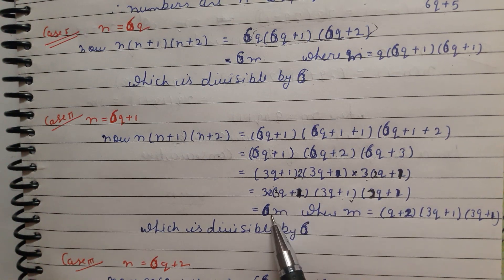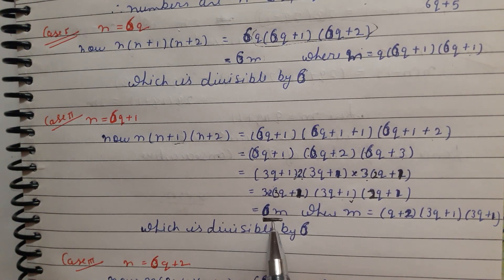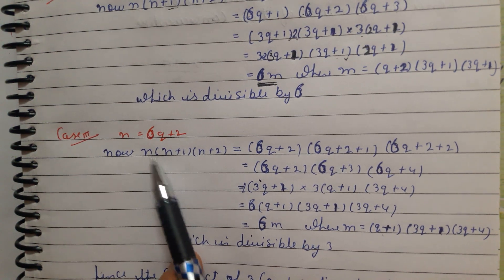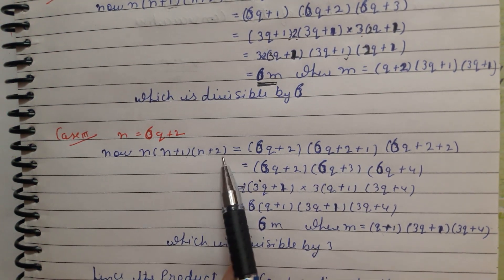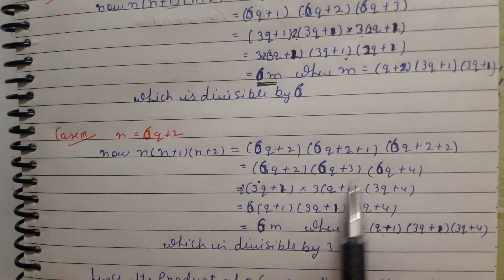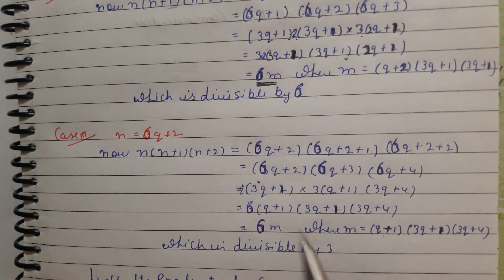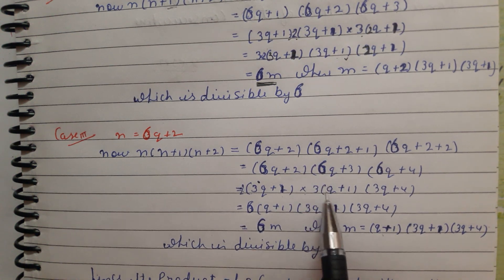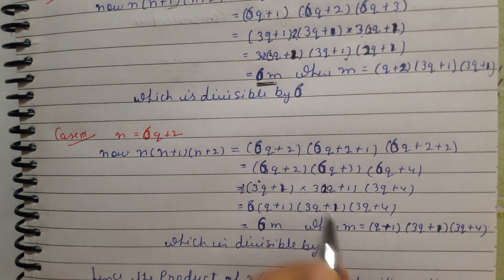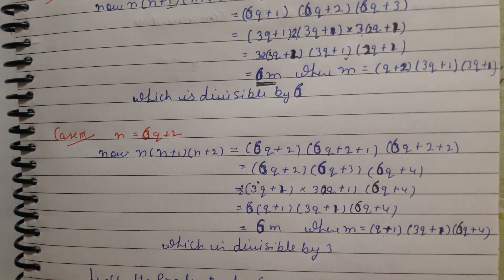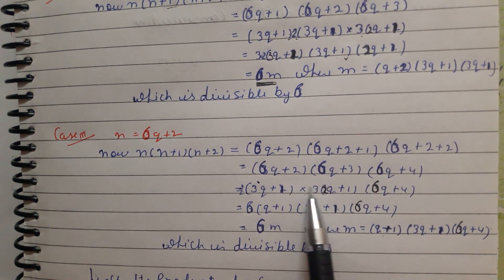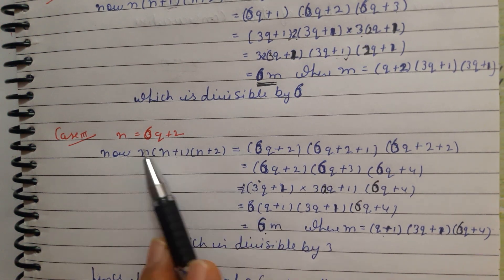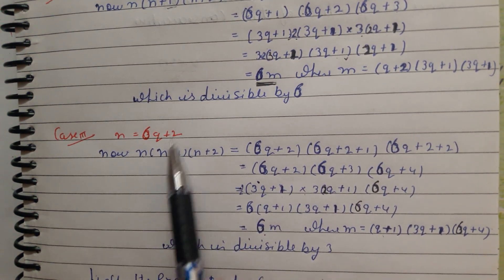This shows divisibility by 6 for case 2. For case 3: n = 6q+2. The three numbers are 6q+2, 6q+3, 6q+4. Here also there is no direct multiple of 6, so take 2 common from (6q+2) giving 2(3q+1), and take 3 common from (6q+3) giving 3(2q+1). So 2 × 3 = 6, and the product is divisible by 6. You should then solve cases for 6q+3, 6q+4, and 6q+5 similarly.